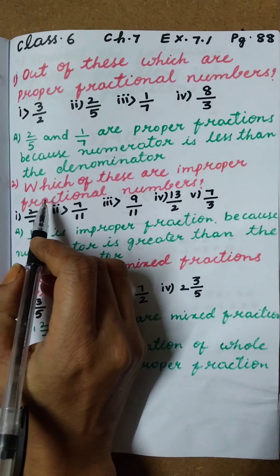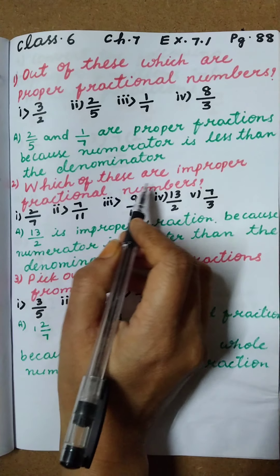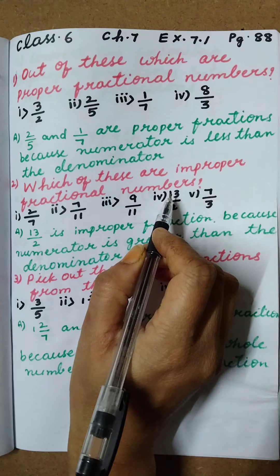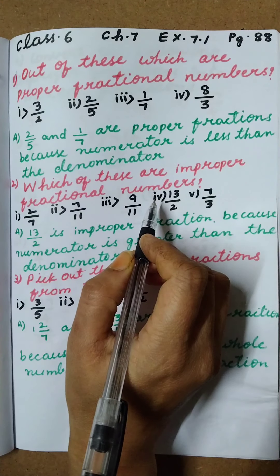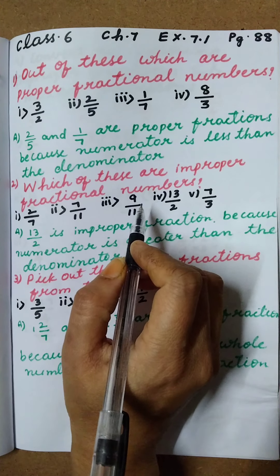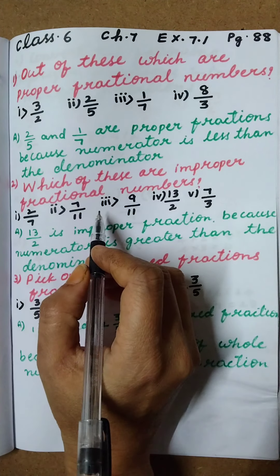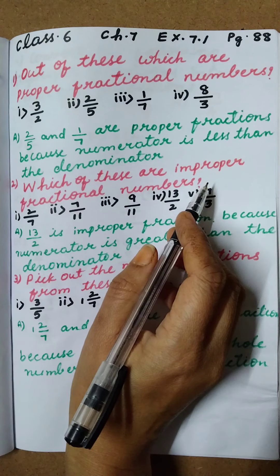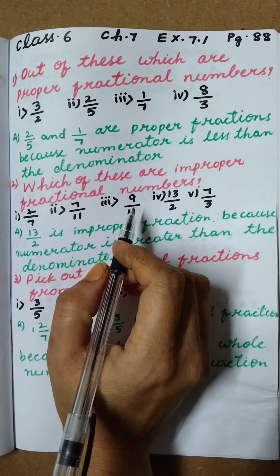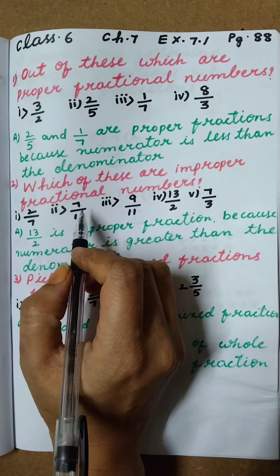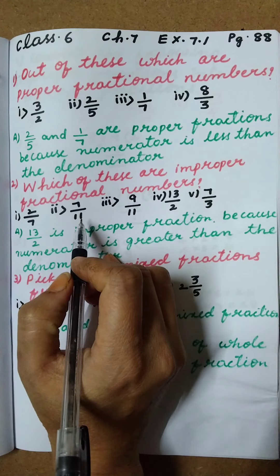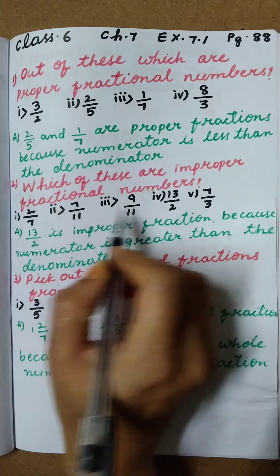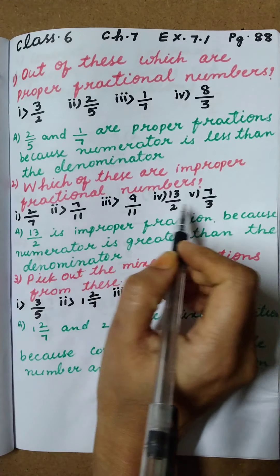See the second question: which of these are improper fractional numbers? What is the definition of improper fractions? Numerator is greater than the denominator are called improper fractions. The numerator should be greater and the denominator should be lesser. In this, which are your improper fractions?